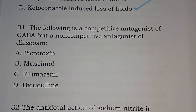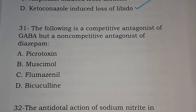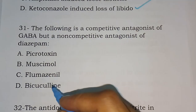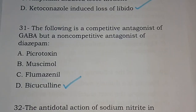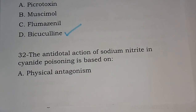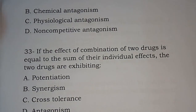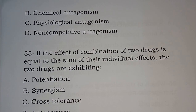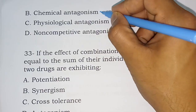Question 31: The following is a competitive antagonist of GABA but a non-competitive antagonist of diazepam. Options are picrotoxin, muscimol, flumazenil, bicuculin. The correct answer is option D, bicuculin. Question 32: The antidotal action of sodium nitrite in cyanide poisoning is based on physical antagonism, chemical antagonism, physiological antagonism, or non-competitive antagonism. The correct answer is option B, chemical antagonism.